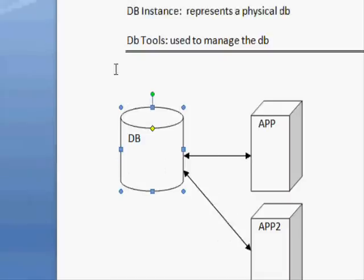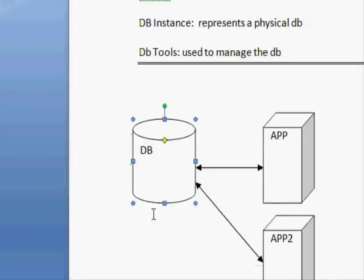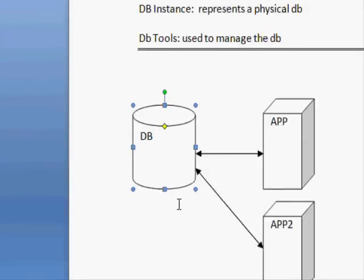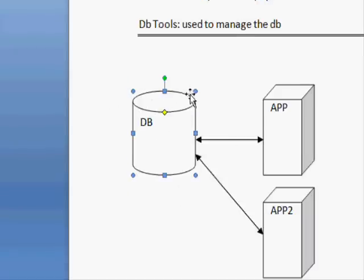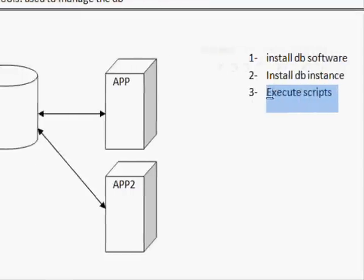The first step is to install the database software — the database management system — on the target machine. The second step is to install the database instance. Usually these two steps are done together in a single wizard. After that, you need to create the tables, because the wizard creates the instance but doesn't know what tables your program needs to run.